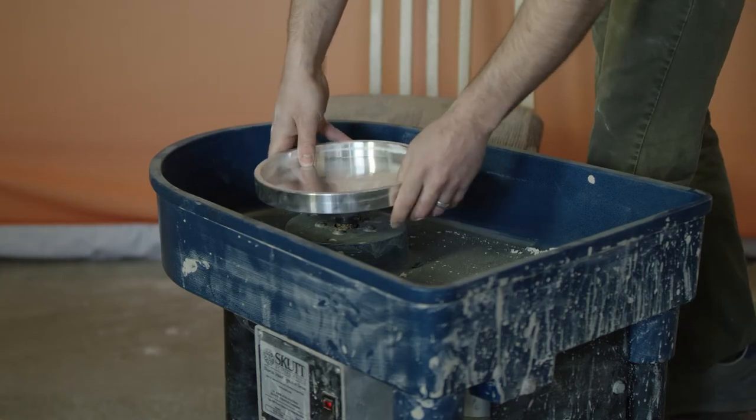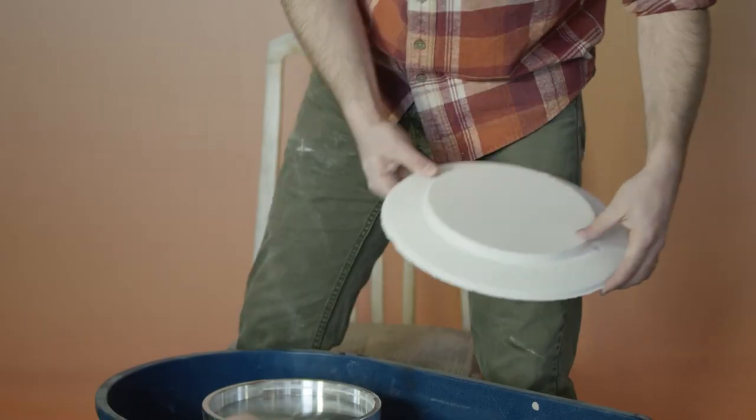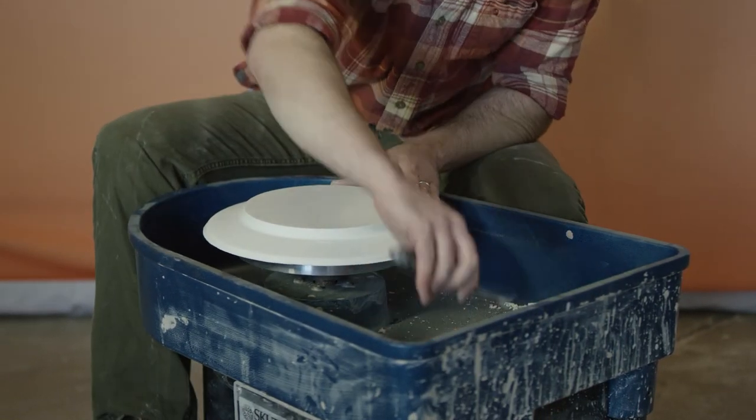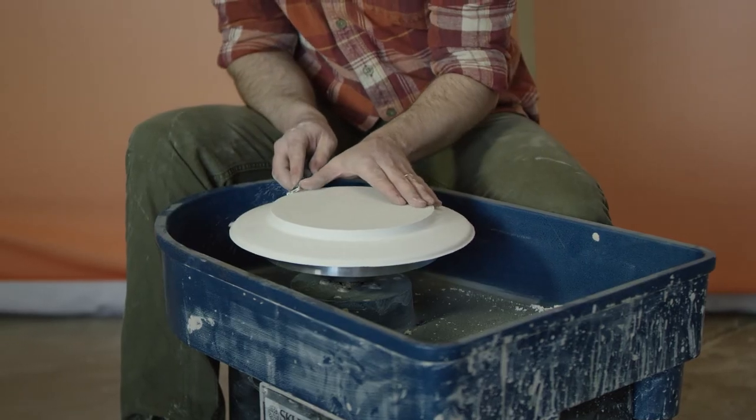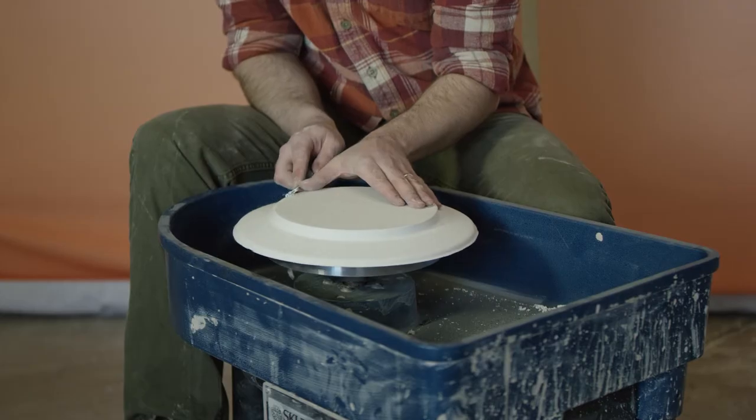Immediately after demolding you want to put it into a wheel with a cup head on it and trim the sharp edges off the bat using just a standard pottery trim tool.